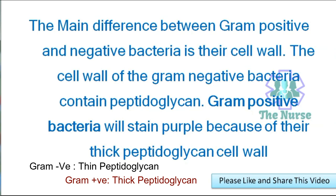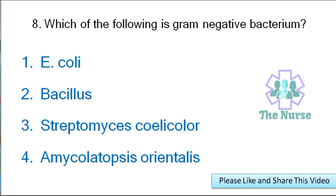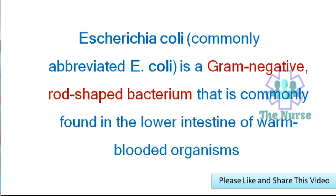Next question: Which of the following is a gram-negative bacterium? — E. coli, Bacillus, Streptomyces coelicolor, or Amycolatopsis orientalis? Correct answer is E. coli. Escherichia coli is a gram-negative rod-shaped bacterium that is commonly found in the lower intestine of warm-blooded organisms.